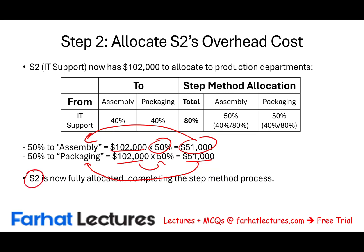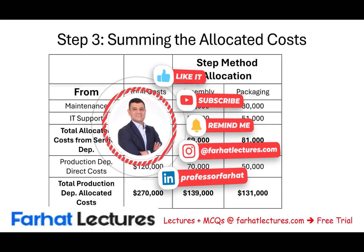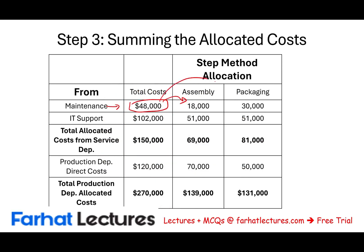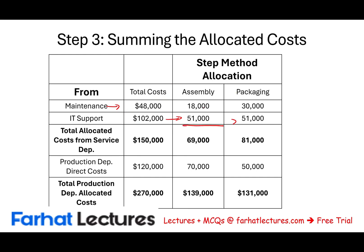S2, which is IT, is now fully allocated, completing the step method process. From maintenance: $18,000 allocated to assembly, $30,000 to packaging, and $72,000 to IT. From IT: $51,000 to assembly, $51,000 to packaging. Assembly receives $18,000 + $51,000 = $69,000 allocated from maintenance and IT support. Packaging receives $30,000 + $51,000 = $81,000.